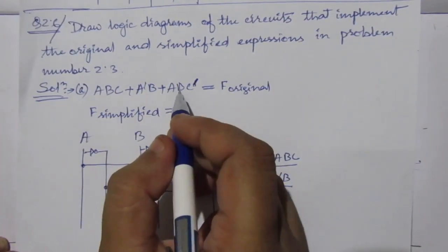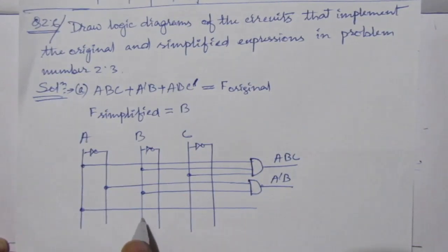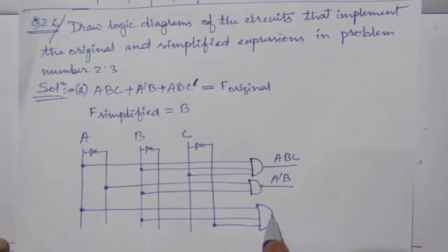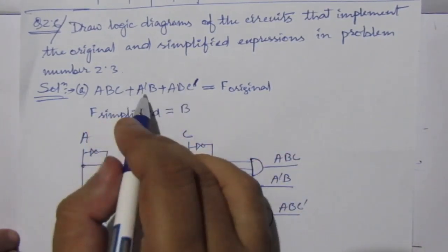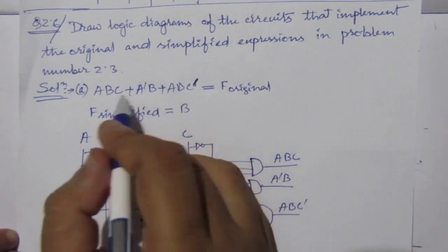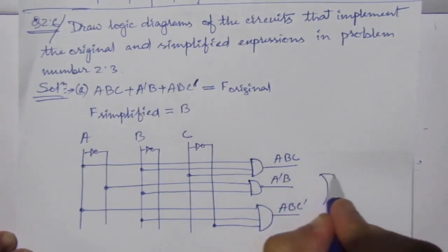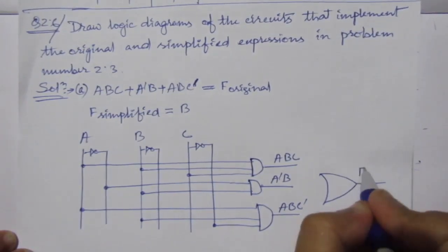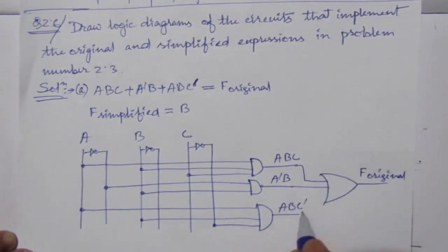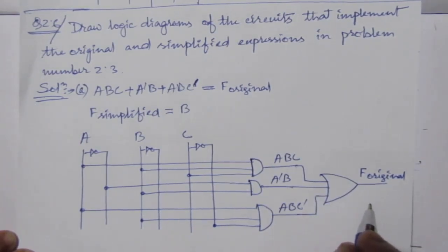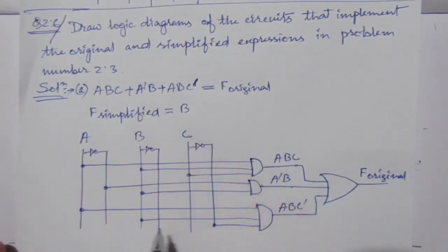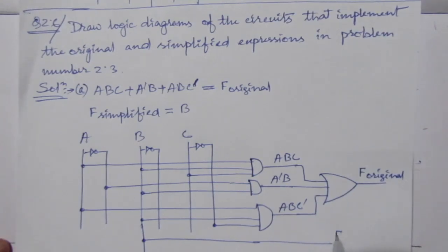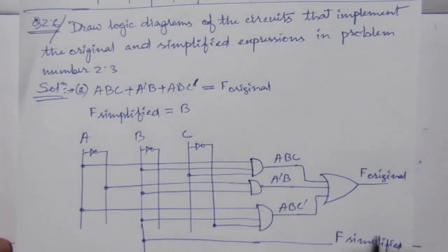The third term is ABC̅ — take lines from A, B and C̅ and use an AND gate to get ABC̅. Now use an OR gate to get the summation of all three terms, giving F original. For F simplified, it is directly B, so just take a line from B — that is F simplified. This is the solution for part A.